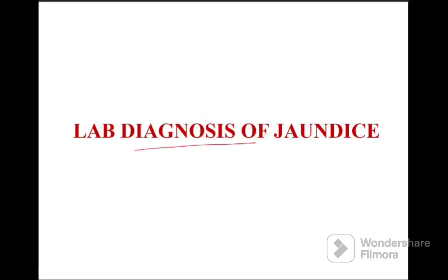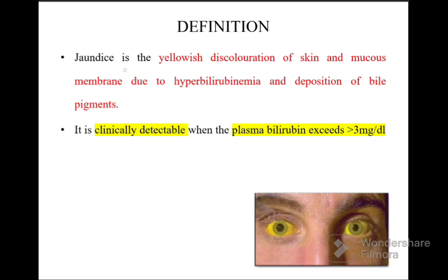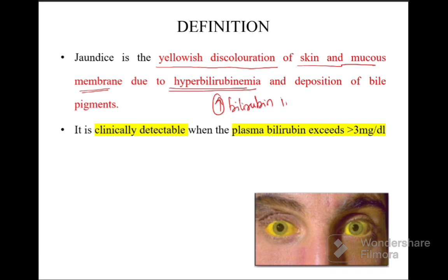Lab diagnosis of jaundice. Firstly, jaundice is yellowish discoloration of skin and mucous membrane because of hyperbilirubinemia, that is increased bilirubin content in the blood, and also because of deposition of the bile pigments.